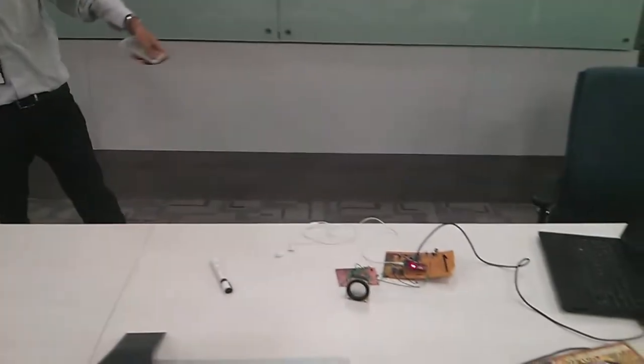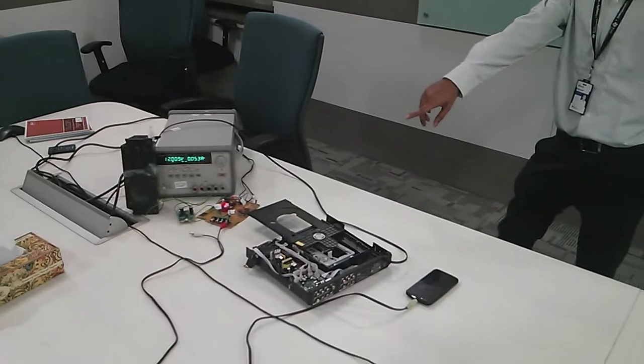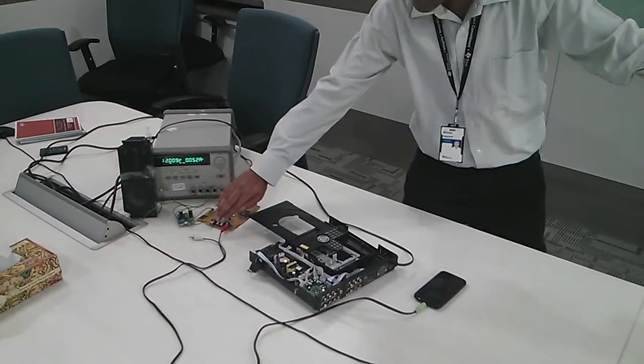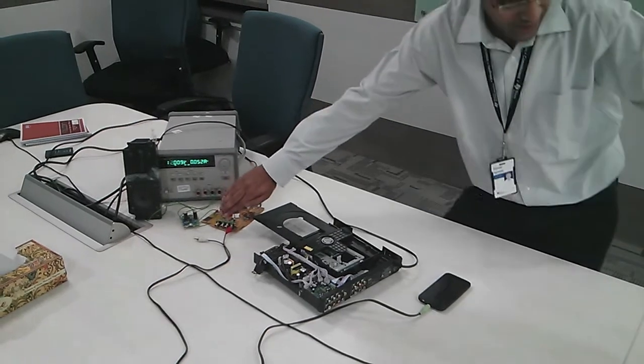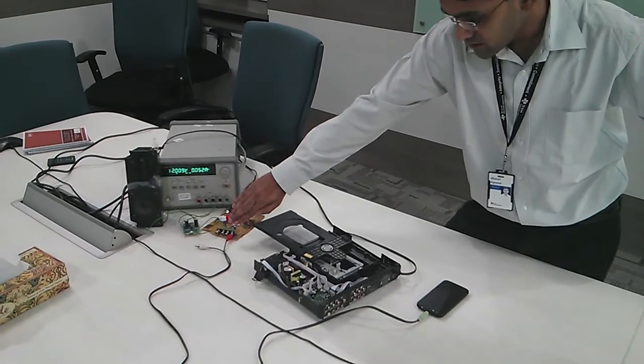Here you can see when I point the remote towards the remote side module, we have the CD tray opening on the set-top box side. That means even if I don't have the set-top box in line of sight, through RF transmission I can open and close the CD tray.